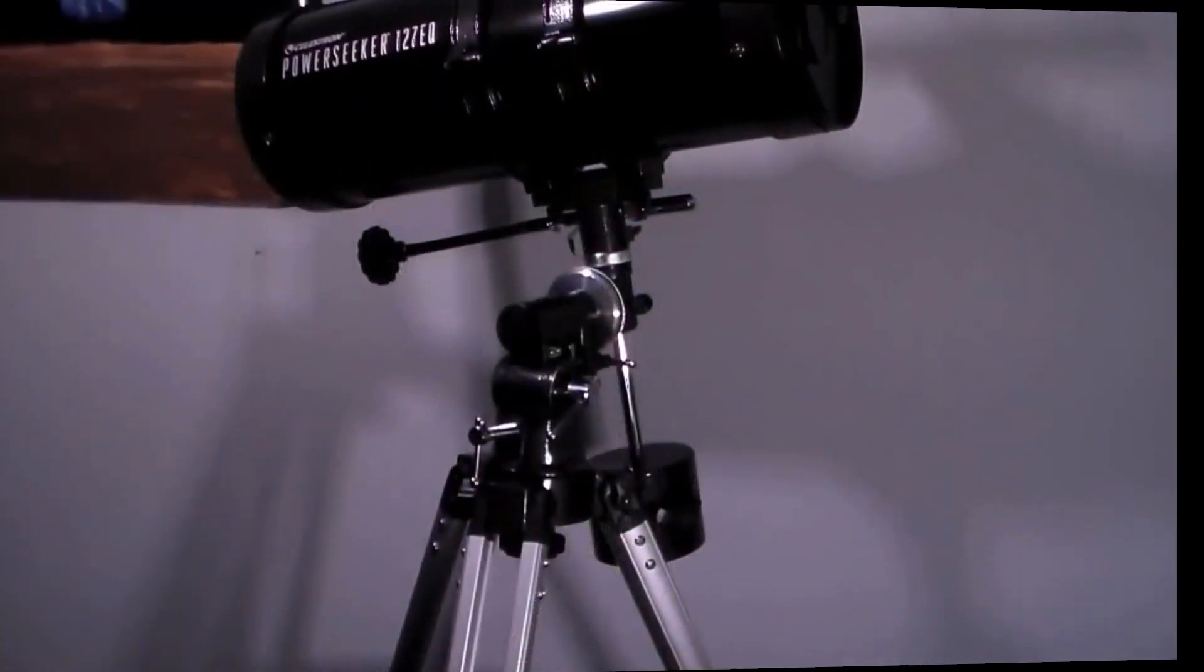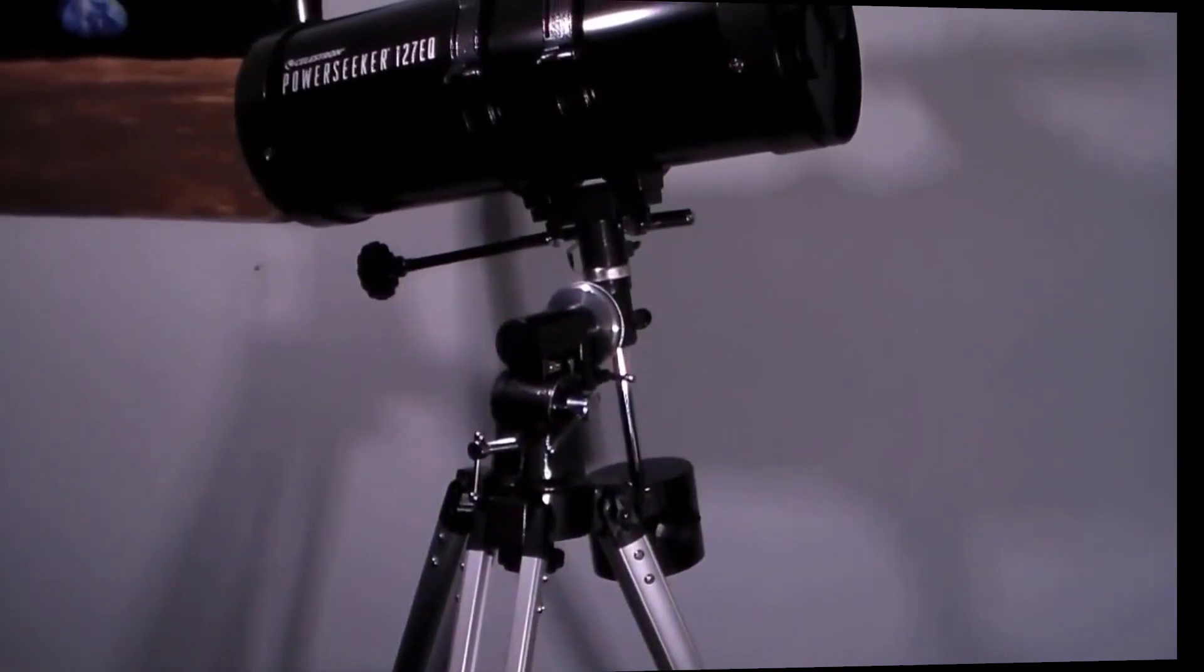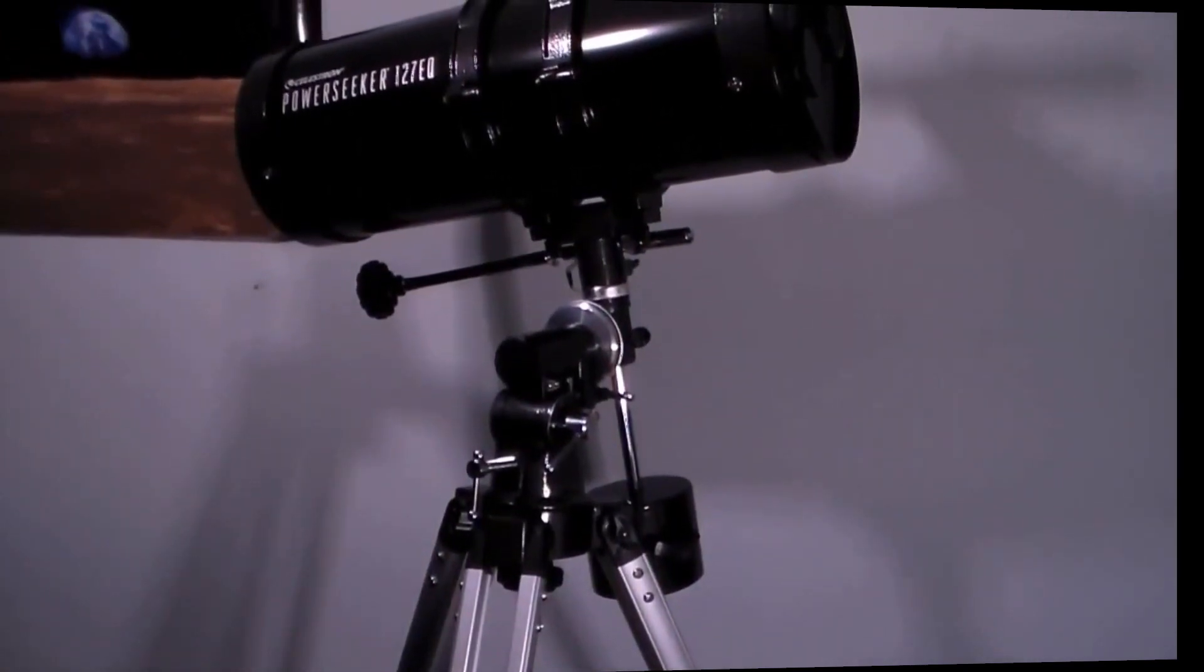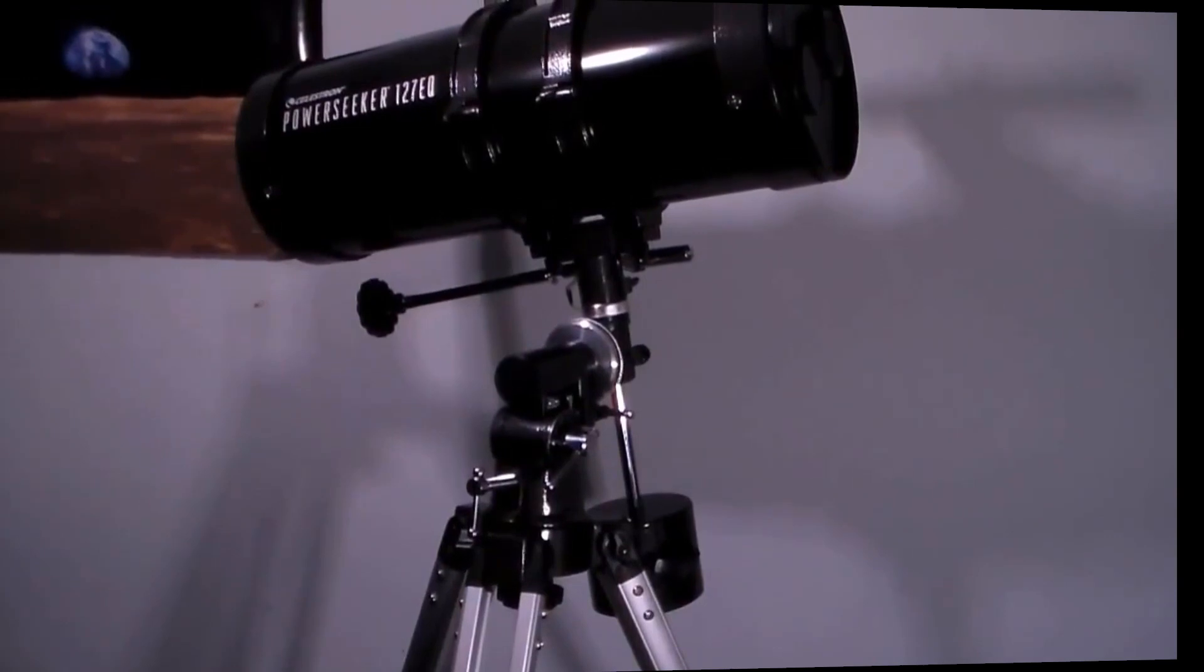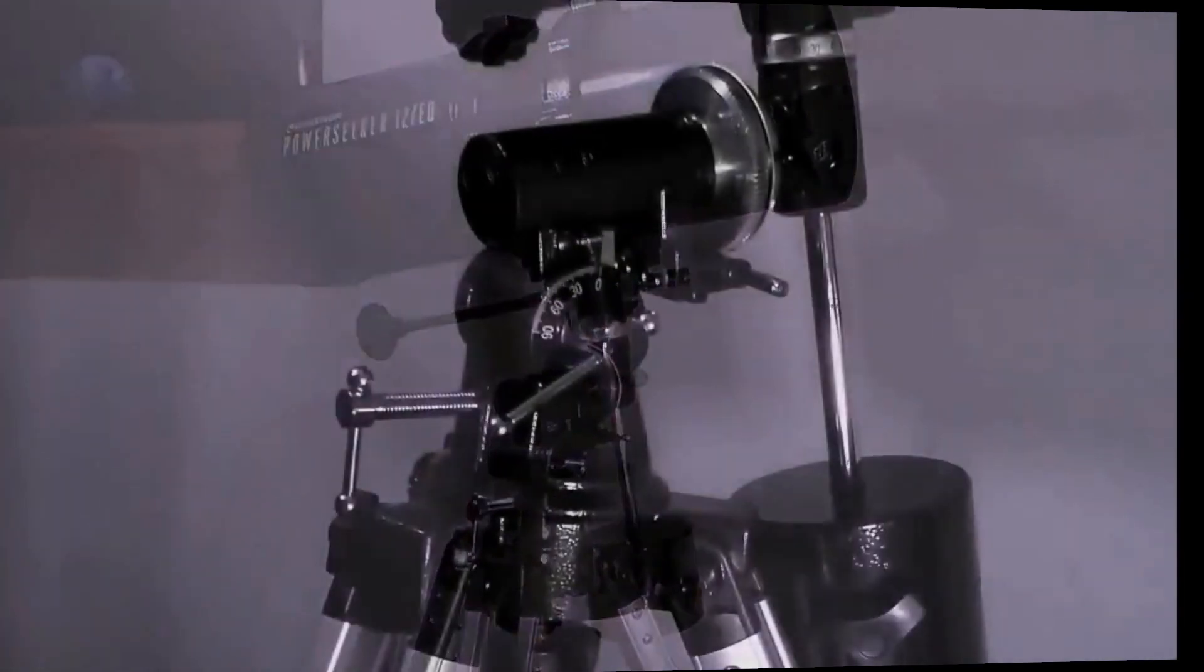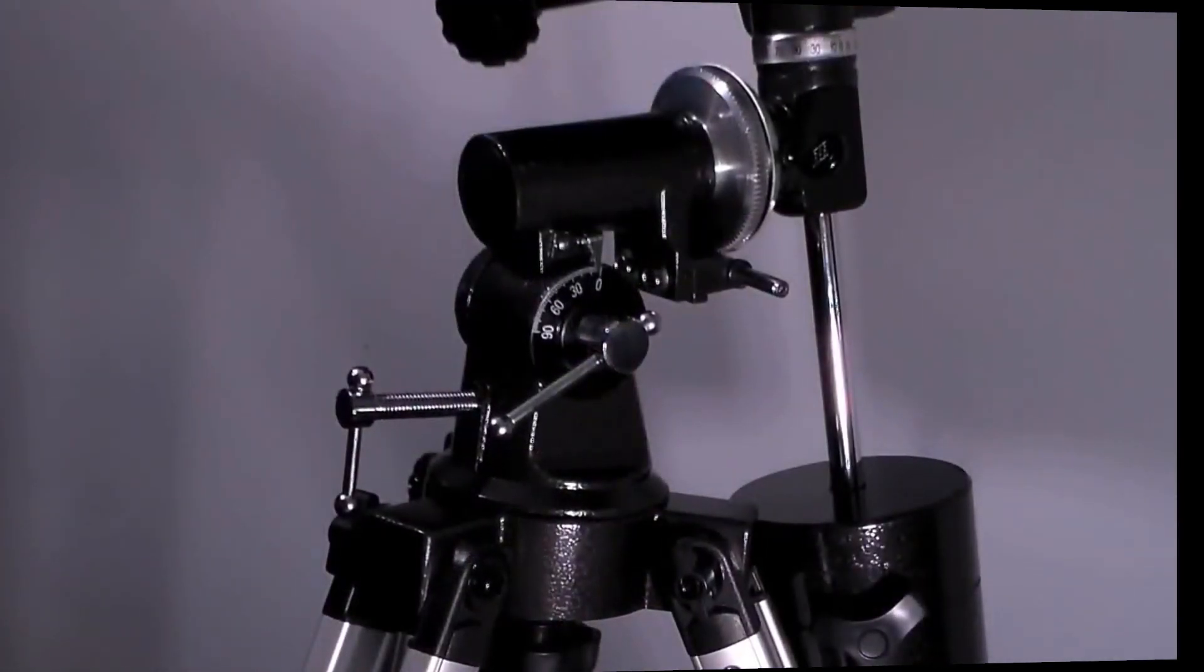This telescope does not take a lot of time to set up and it does not require any tools to assemble it. The Celestron PowerSeeker 127EQ has slow motion controls for smooth tracking.